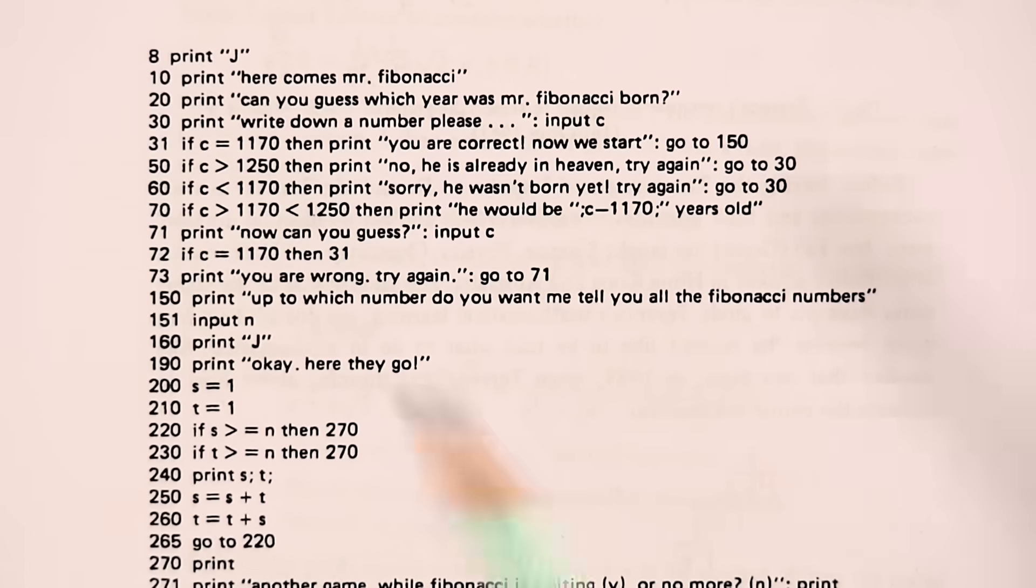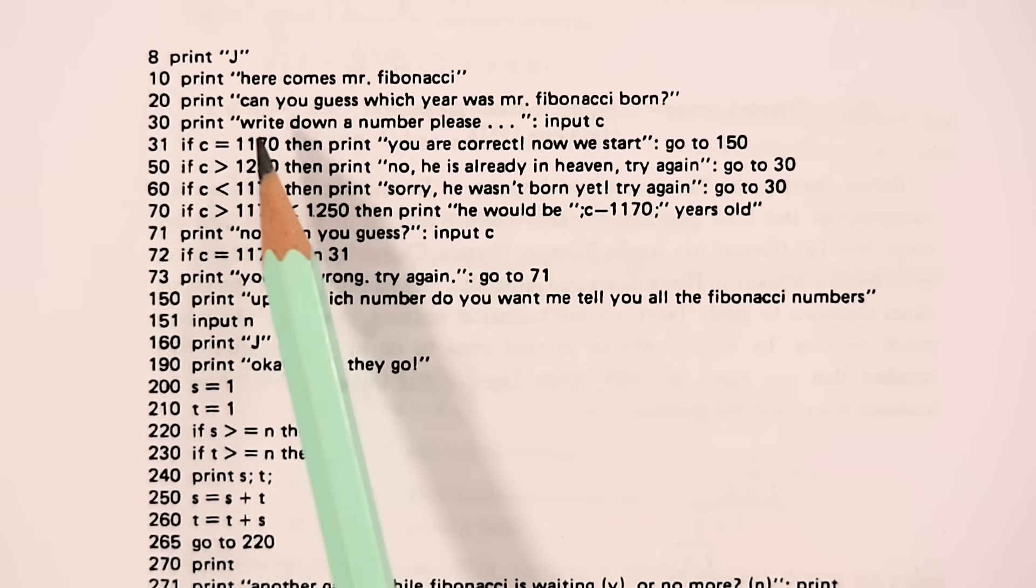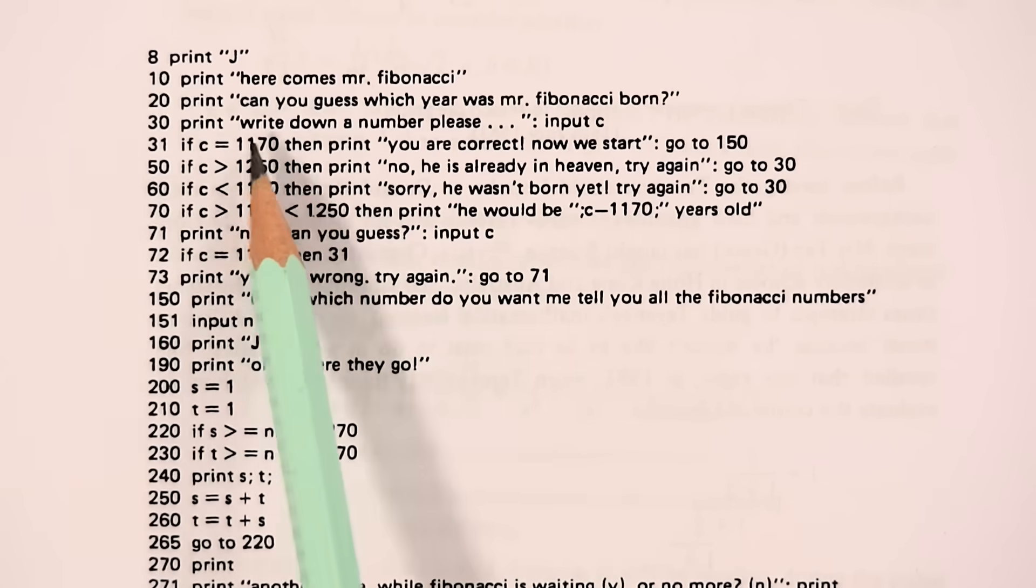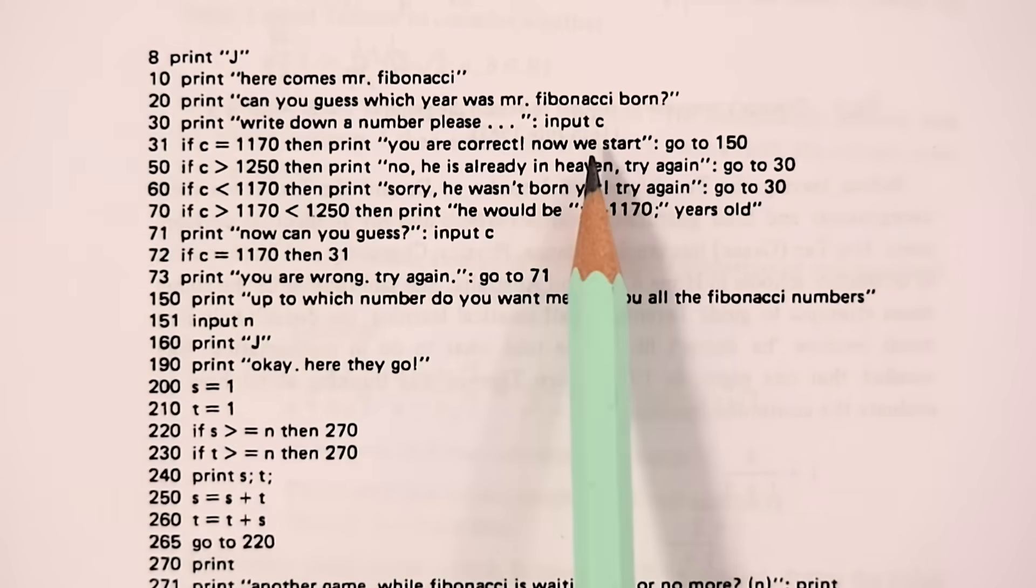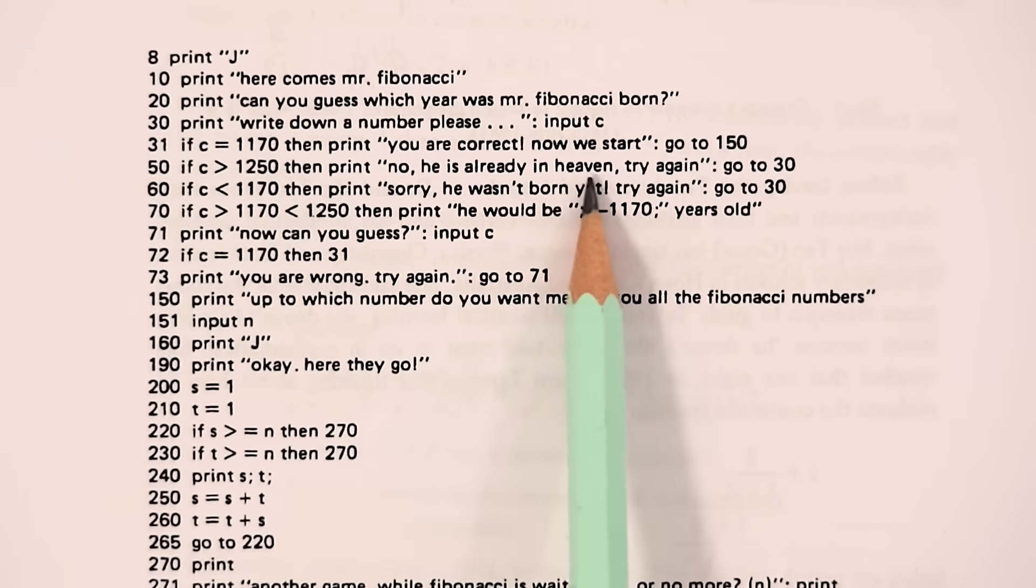It doesn't just calculate the sequence. It starts with, here comes Mr. Fibonacci. Can you guess which year was Mr. Fibonacci born? Write down a number, please. Then if the user inputs the correct answer, they can start. However, if their guess is too far off, they'll be told no, he is already in heaven. Try again.